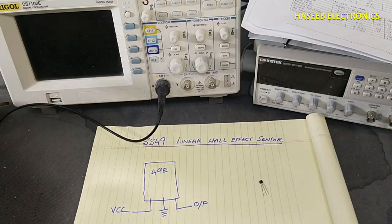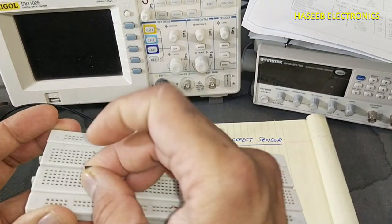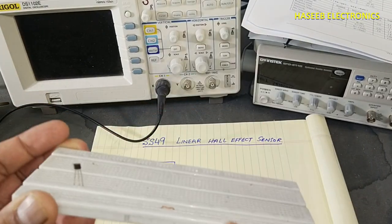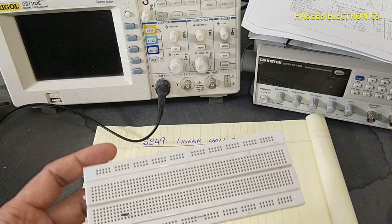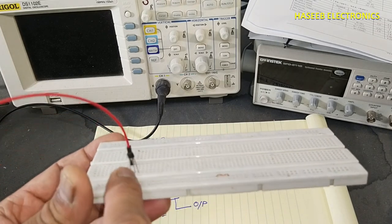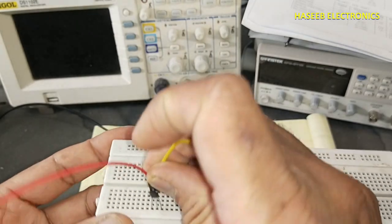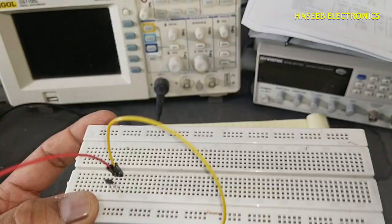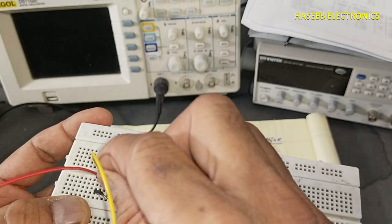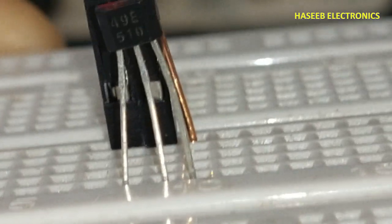Let's check it. I will place on this project board. In this way we can test it while it is in the circuit. We will apply positive 5 volt at the left pin, ground to the center pin, and we will take output from the rightmost pin. We will connect in this way.